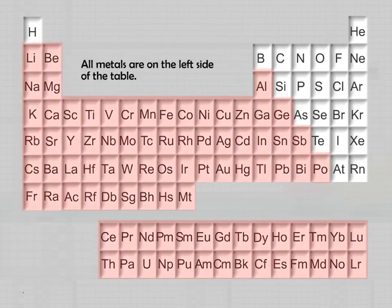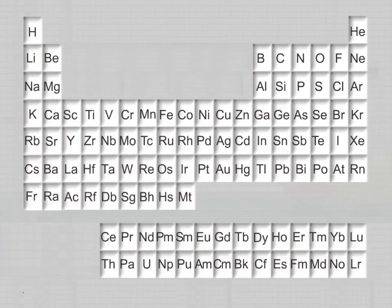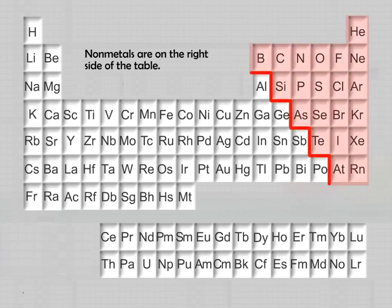All metals are on the left side of the table. Non-metals are on the right side of the table. A step-like line separates them.